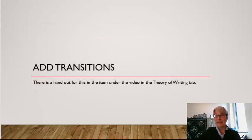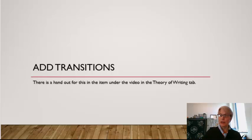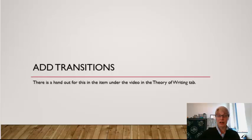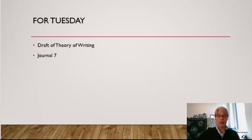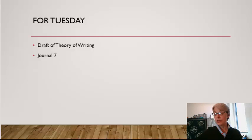Then you want to add transitions. Once you've pasted all of your information into the sections, you can turn them all into paragraphs, but you're going to need transitions. There is a handout of transitions in the theory of writing tab in our Blackboard course. Once you've done all that, your draft of your theory of writing is due next Tuesday, along with your journal 7. Journal 7 is something that, as you're composing it, you might want to put in your draft as well. These are all things you might consider in order to make composing the draft of your theory of writing easier to do.